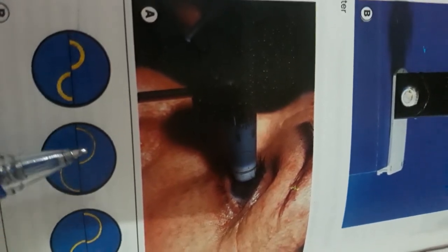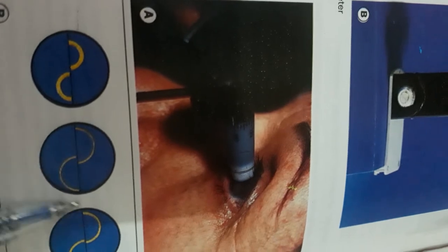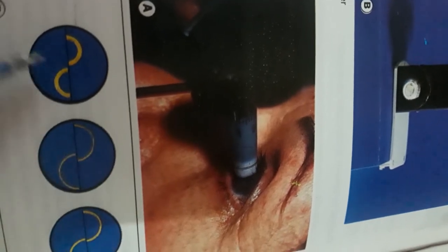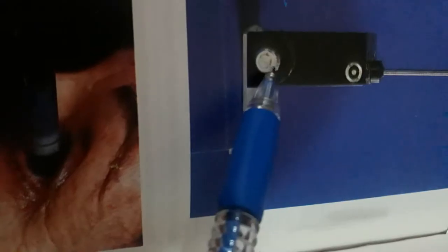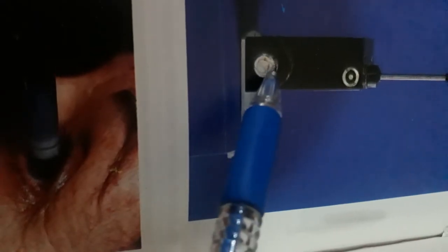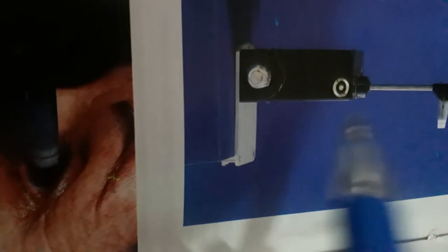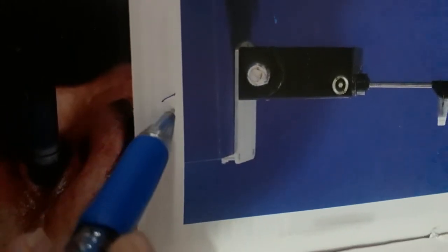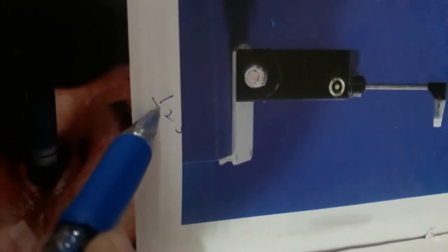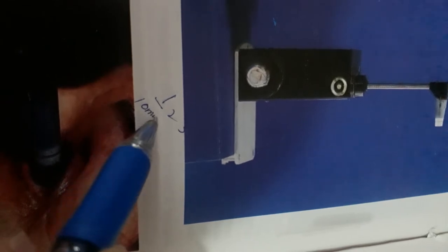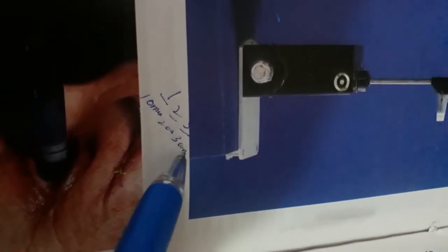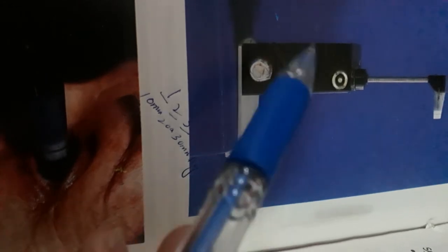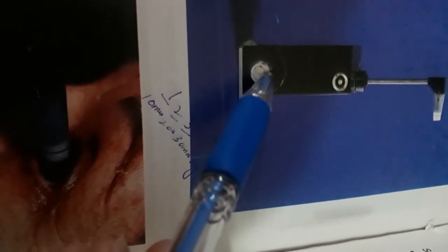Goldmann applanation has a dial with numbering 1, 2, 3. One means 10 millimeters Hg, two means 20 millimeters Hg, three means 30 millimeters Hg. We measure by moving the dial and observing the mires.